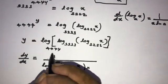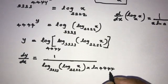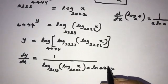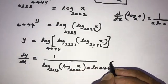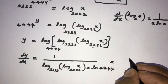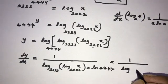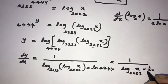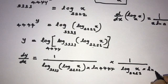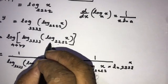times ln 4444. Okay, now according to chain rule, derivative of this term, so we can write 1 over log of x base 2222 times ln 3333. Okay, according to chain rule, now derivative